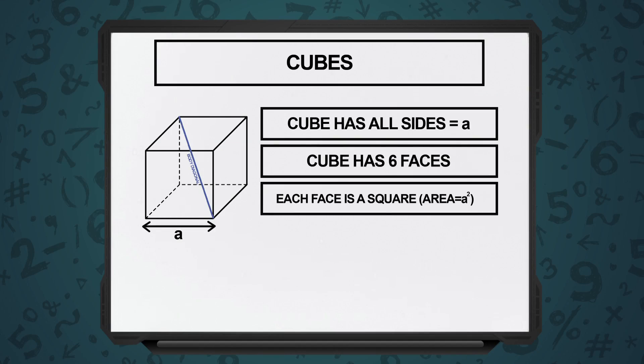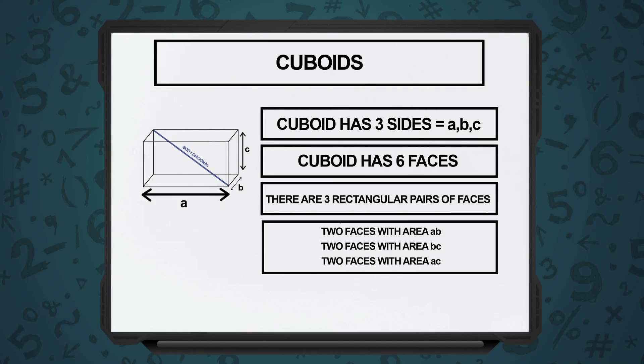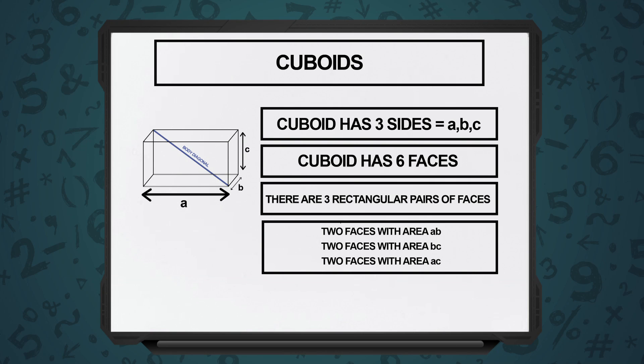The next figure that we are going to discuss is a cuboid, also known as a Rectangular Parallelopiped. In this, unlike a cube where all sides had the same length, you would have one length, you would have some breadth, and you would have some height. So there would be different rectangles on different faces. That is why this structure is known as a Rectangular Parallelopiped or a Cuboid.